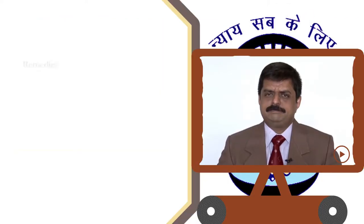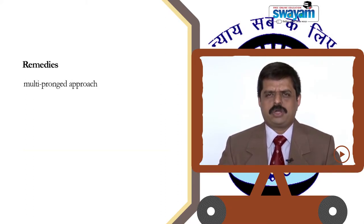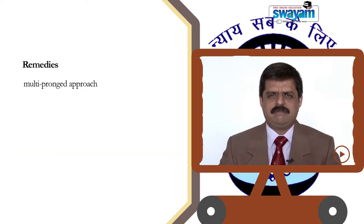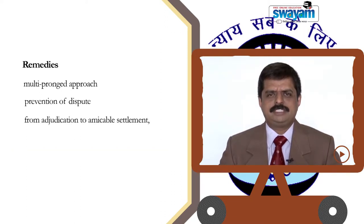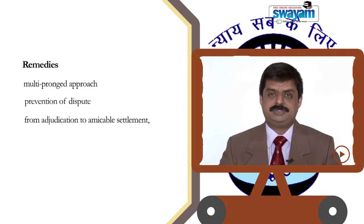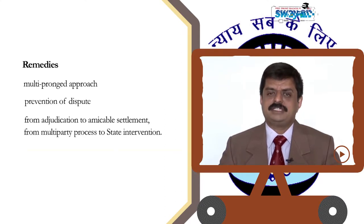Coming to the remedies provided under the Industrial Disputes Act. The IDA Act has developed a multi-pronged approach — multi-pronged in the sense there is a series of attempts made to resolve disputes. First, there is an attempt to have an amicable settlement of a dispute; next, an attempt at adjudication; then an attempt for state intervention.